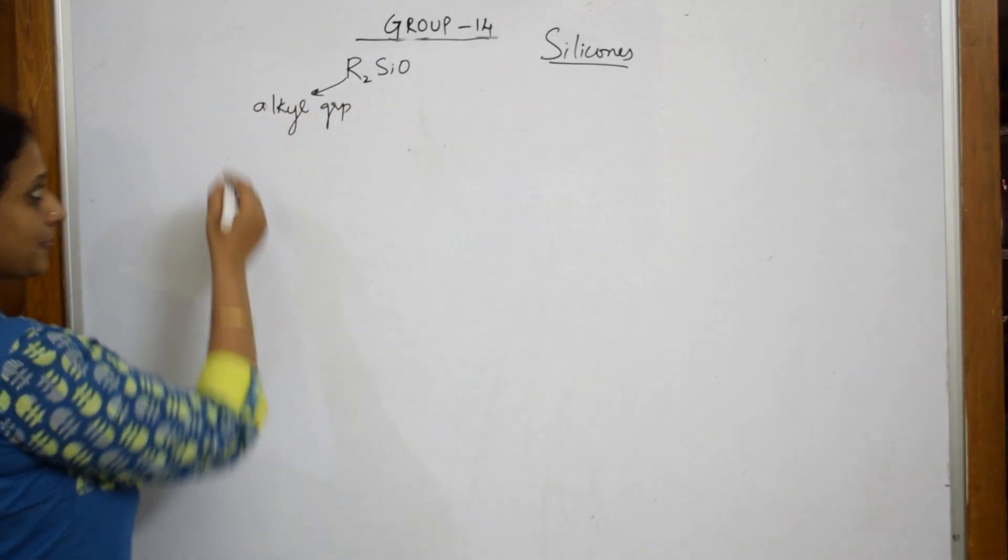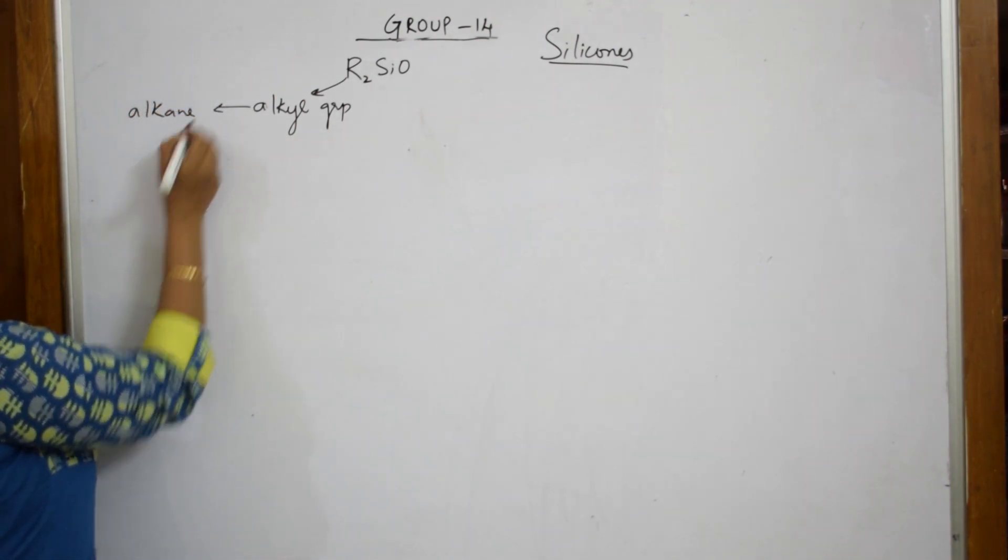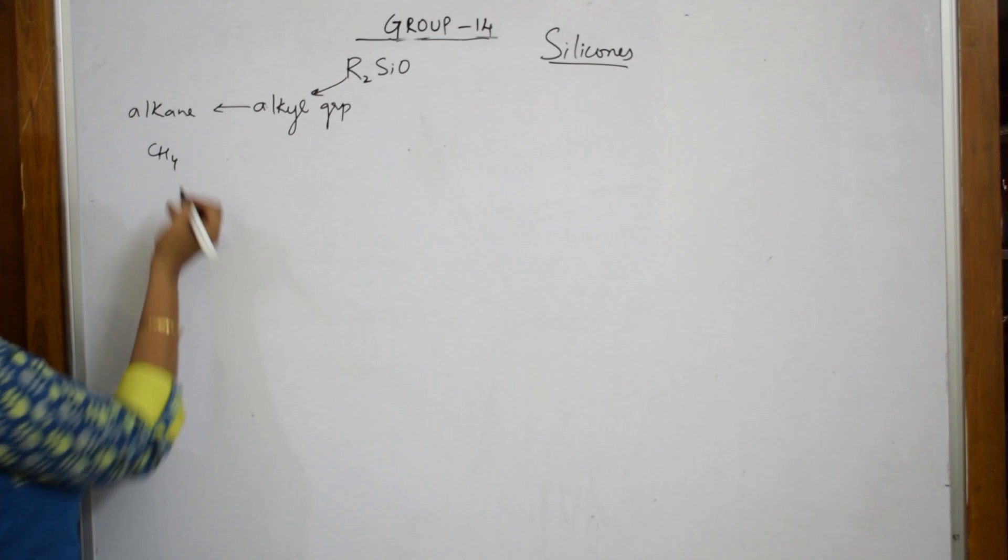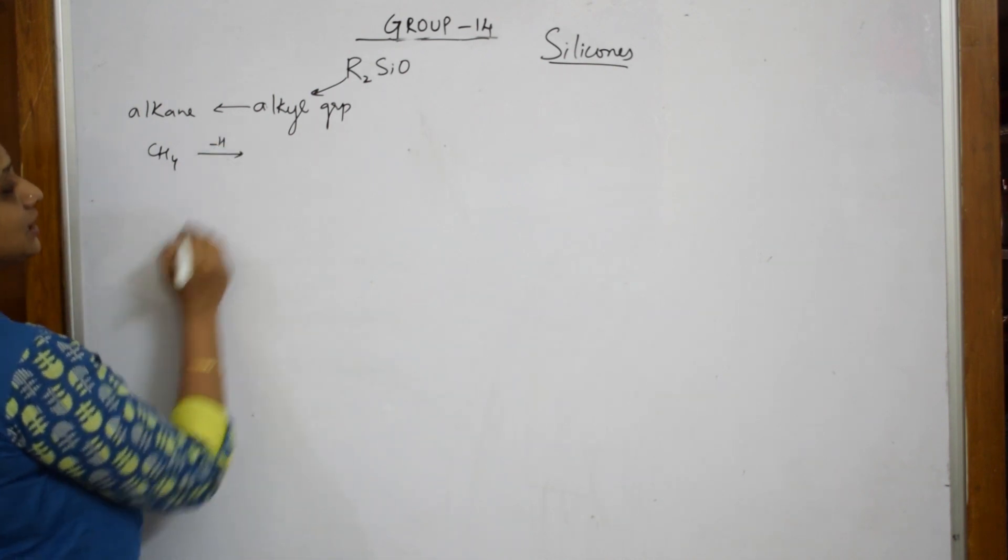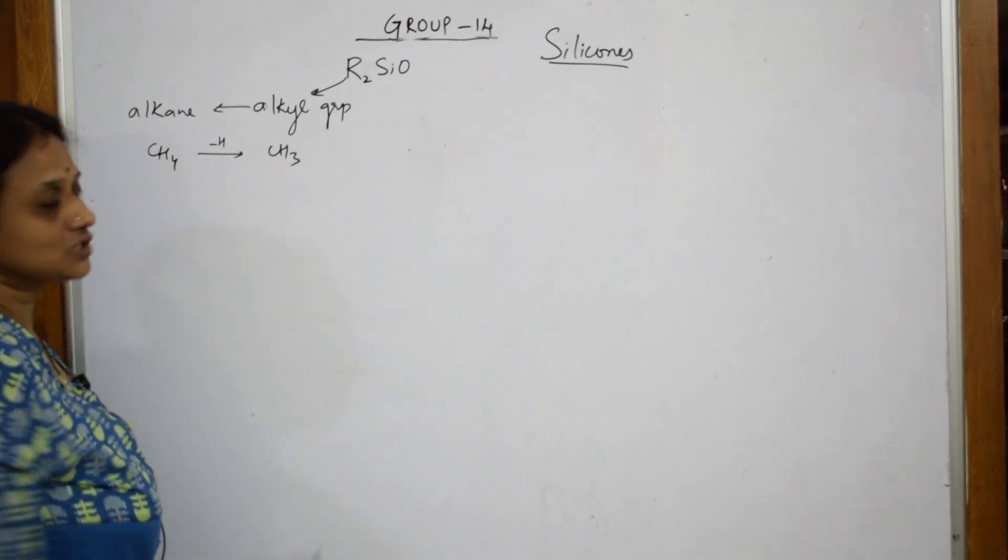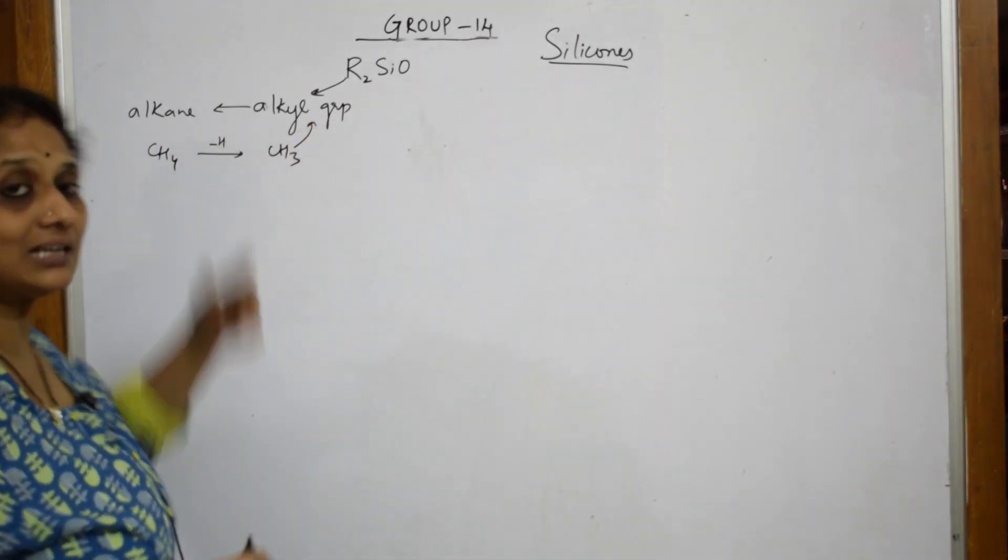What is an alkyl group? Suppose if I take an alkane. In alkane, suppose if I take the basic alkane methane, if I remove one hydrogen from this, it becomes methyl. So, methyl is an alkyl group. One hydrogen less than alkane is called an alkyl group.